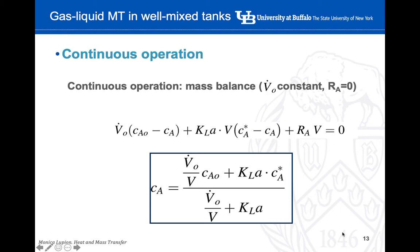For continuous operation, the approach is a little different. We formulate a mass balance: what is getting in, minus what is getting out, plus what is being transferred from one phase to another, plus any generation due to chemical reaction, equals zero. Assuming no chemical reaction, the generation term equals zero and can be cancelled. We can then solve for the concentration of element A by rearranging the mass balance equation, with the definition of concentration of element A boxed in black.